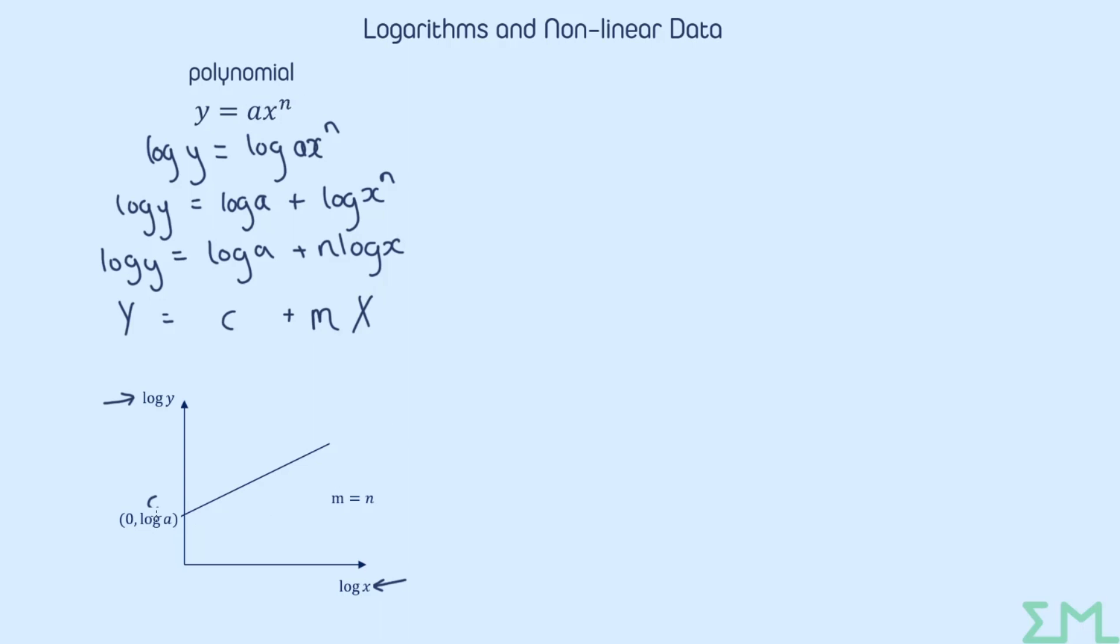The log a and the n link straight back to the y equals ax to the n. So here, if we knew what our intercept was, that was a number, we would be able to work backwards and work out what a is. And if we knew the gradient of the straight line, in the polynomial case, the gradient of the straight line will just be the power, the n, in the original model. So what we see here with polynomial is that we have to log both the dependent and independent variables to produce a straight line graph.